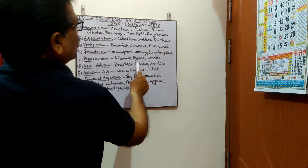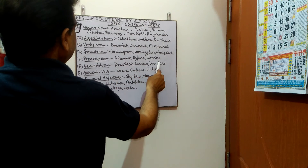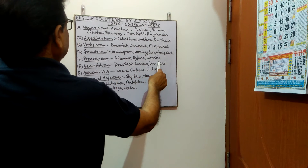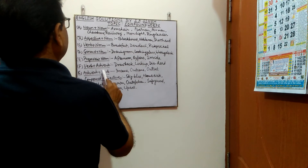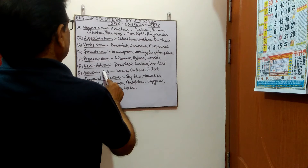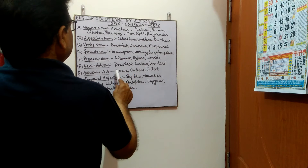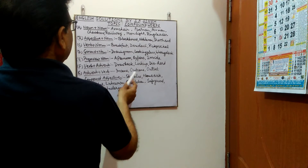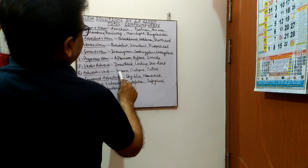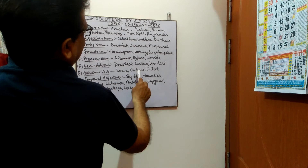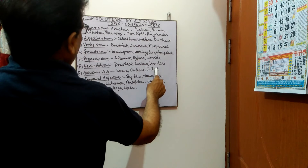The next category is verb and adverb. Examples are: drawback, lock up, and die hard. And the next category is adverb and verb — adverb first, then verb. Examples are: income, outcome, and outset.